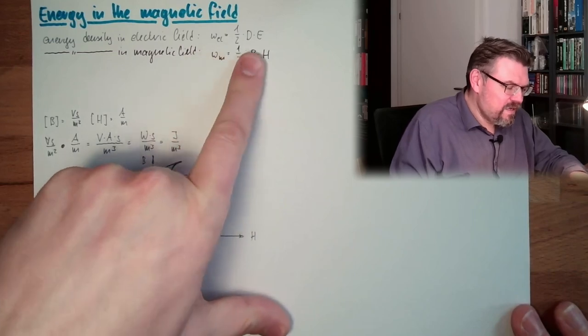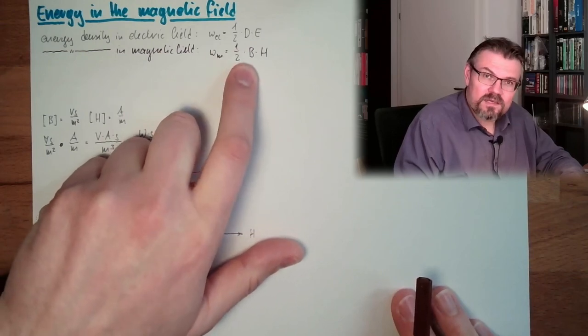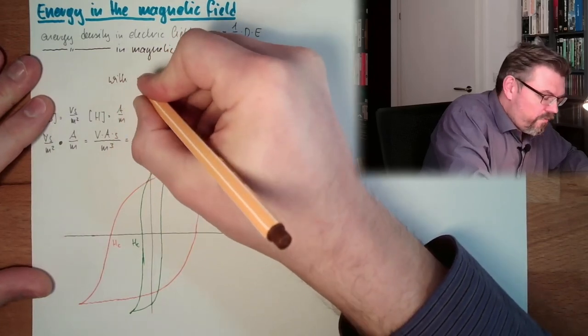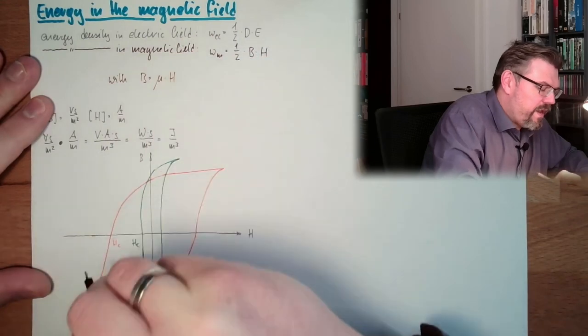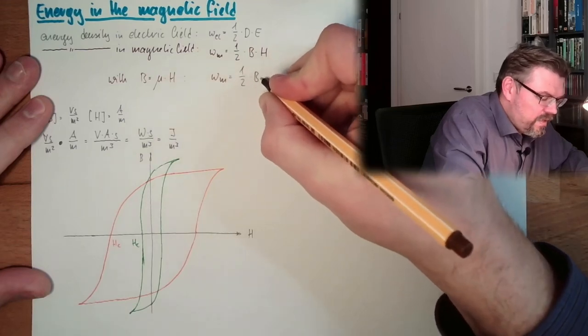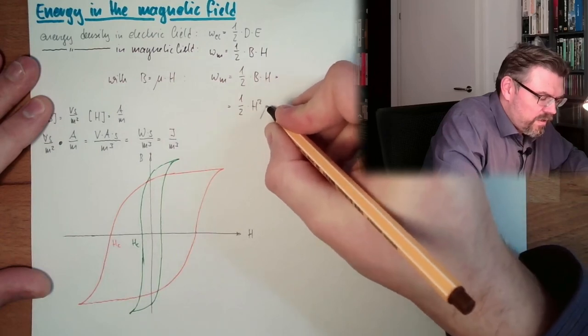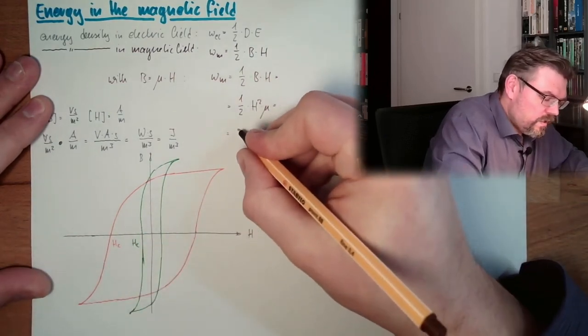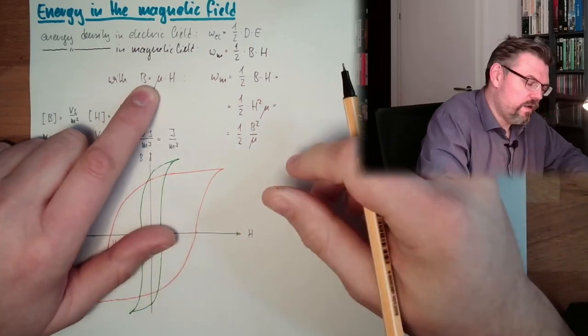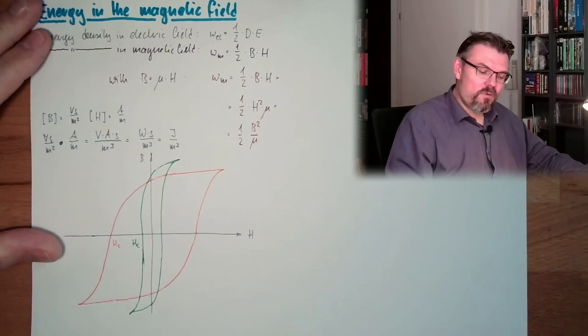So this is the density per cubic meter in a certain area where this field strength and this flux density belong together. And with B equals mu multiplied by H, we can get the following. One half multiplied by B multiplied by H equals one half H squared multiplied by mu, or one half B squared divided by mu. So these are the three forms of the energy density in the magnetic field.